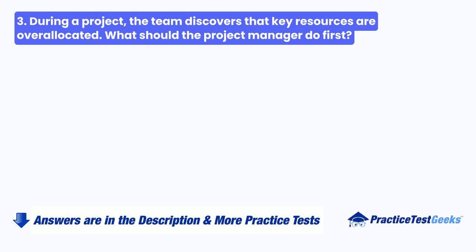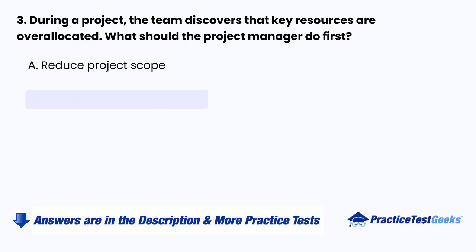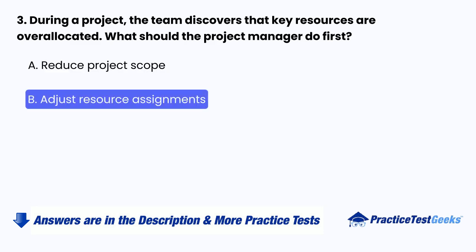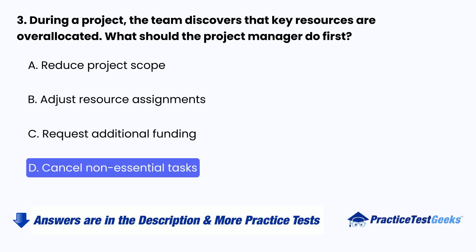Question 3: During a project, the team discovers that key resources are over-allocated. What should the project manager do first? A. Reduce project scope. B. Adjust resource assignments. C. Request additional funding. D. Cancel non-essential tasks.